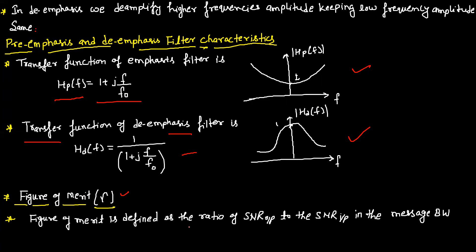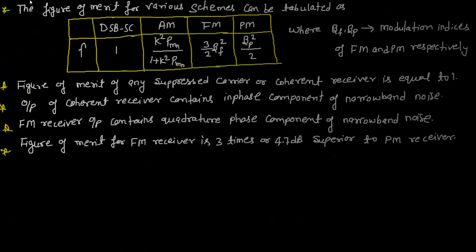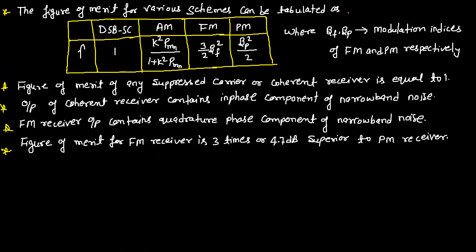Figure of merit is defined as the ratio of SNR output to SNR input in the message bandwidth. The figure of merit for various schemes: DSBSC has a figure of merit of 1; conventional AM has K²·PMN / (1 + K²·PMN); frequency modulation has 3/2·βF²; and phase modulation has βP²/2, where βF and βP are the modulation indices of FM and PM respectively.